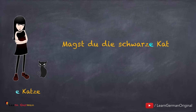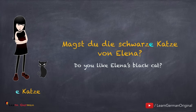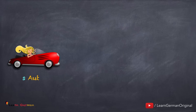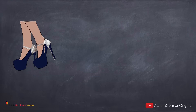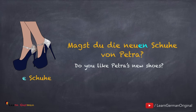Hier ist das Beispiel für Feminin: Magst du die schwarze Katze von Elena? Hier bekommt das Adjektiv die Endung -e. Hier ist das Beispiel für Neutrum: Magst du das schicke Auto von Maria? Hier bekommt das Adjektiv auch die Endung -e, genauso wie im Nominativ. Und Plural: Magst du die neuen Schuhe von Petra? Hier bekommt das Adjektiv die Endung -en.